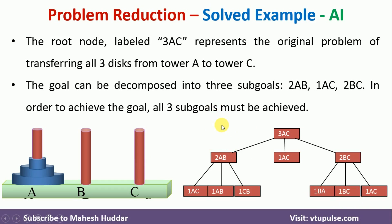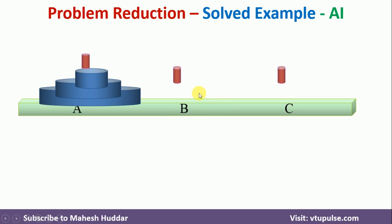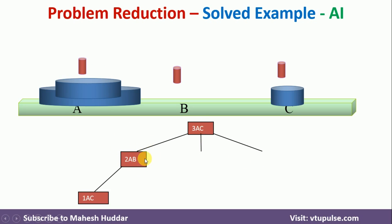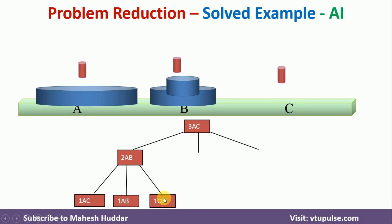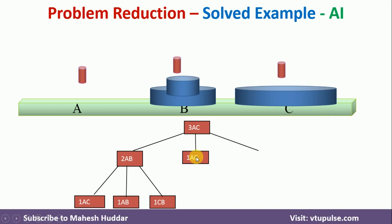Now we will see this process step by step. The main task is to move three tiles from A to C. The first sub-goal is to move two blocks from A to B. First, move one block from A to C; next, move the second block from A to B (1AB); then move the block from C to B (1CB). Now the larger block is moved to C (1AC) — that is the second sub-goal.